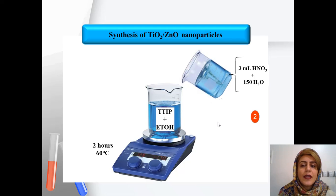Next, three milliliters of nitric acid is added to 150 milliliters of water, and this solution is added drop-wise to the solution of TTIP in ethanol. This solution is then stirred for about two hours at 60 degrees centigrade.